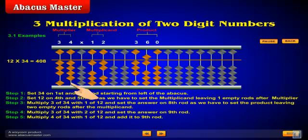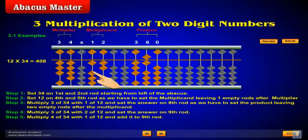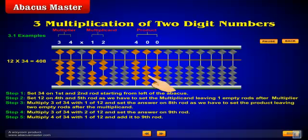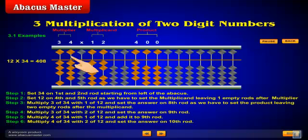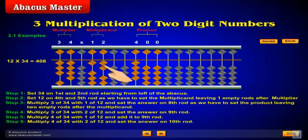Step 5: Multiply 4 of 34 with 1 of 12 and add it to the ninth rod. Step 6: Multiply 4 of 34 with 2 of 12 and set the answer on the tenth rod.